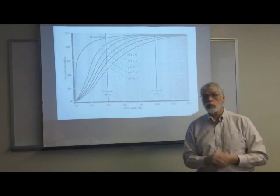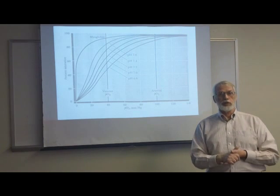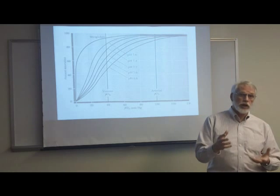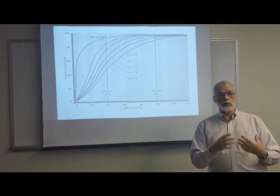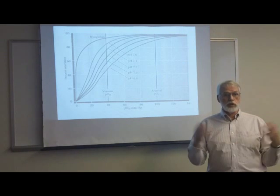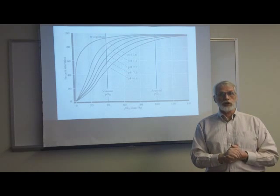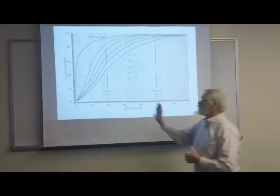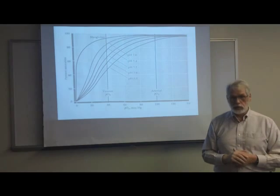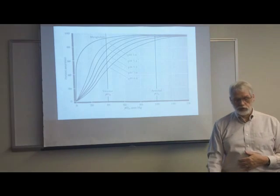The position it locks it into is the deoxy form. So the net result if we add 2,3-bisphosphoglycerate to it, we stabilize the deoxy form. Well, if we stabilize the deoxy form, then what's going to happen to the affinity for oxygen? It's going to take more oxygen to saturate, so the affinity is going to decrease. If the affinity is going to decrease, then the binding curve is going to shift to the right. And if the binding curve shifts to the right, then the P50, which is half saturated, will also increase. Sort of a series of dominoes, if you will, step by step.